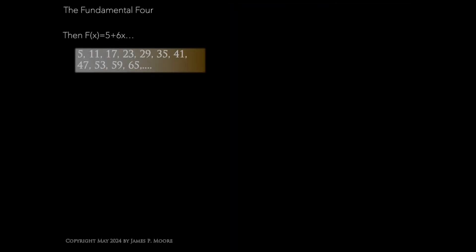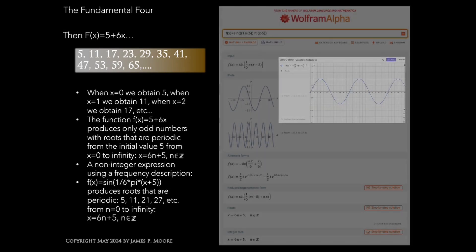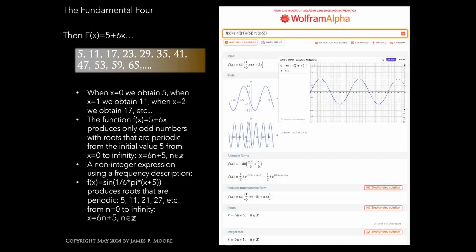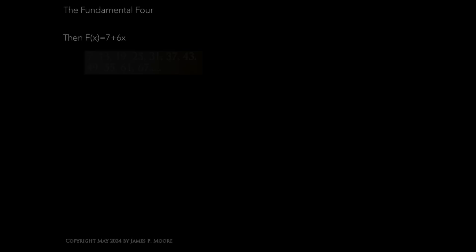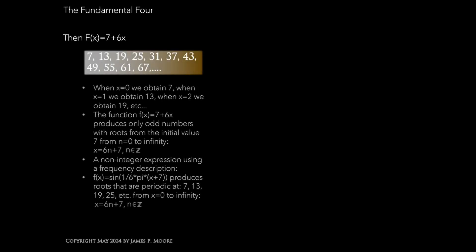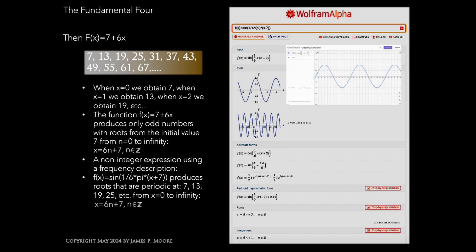For 5 plus 6x, it's the sine of 1 divided by 6 times pi multiplied by x minus 5, giving us roots of 5, 11, 17, 23, 29, from 0 to infinity, and lastly, 7 plus 6x, using the same structure, we get roots of 7, 13, 19, 25, etc.